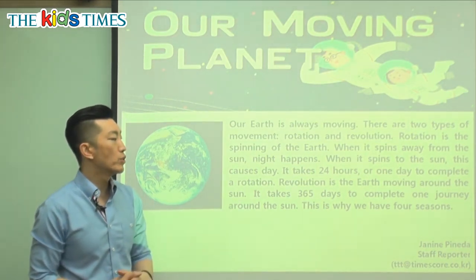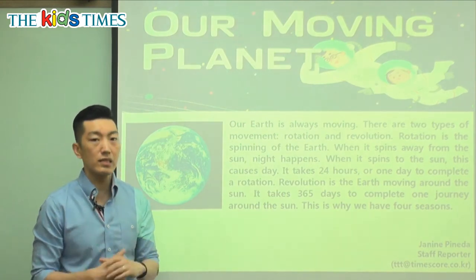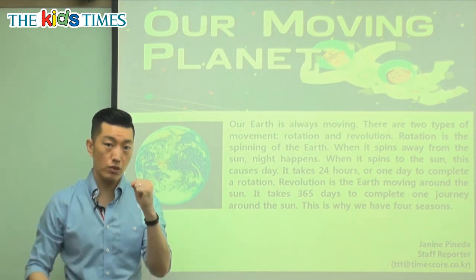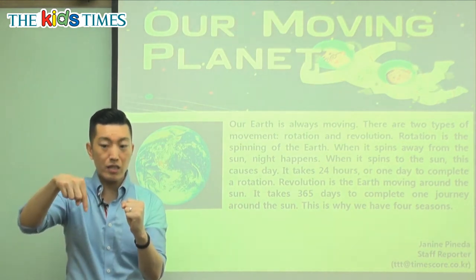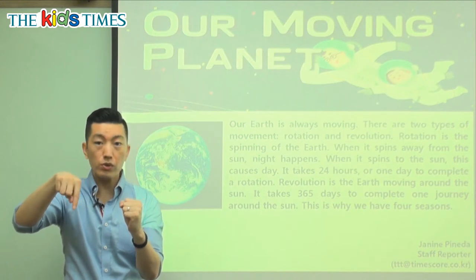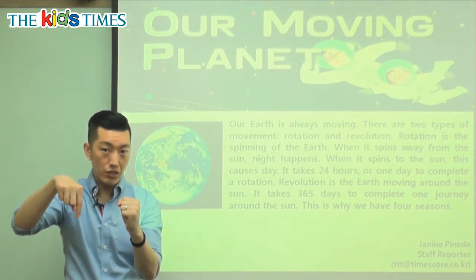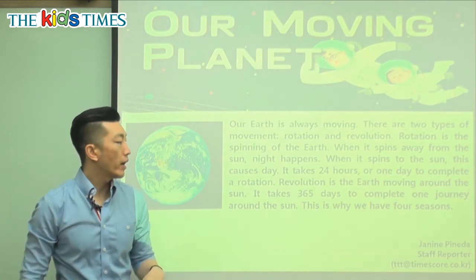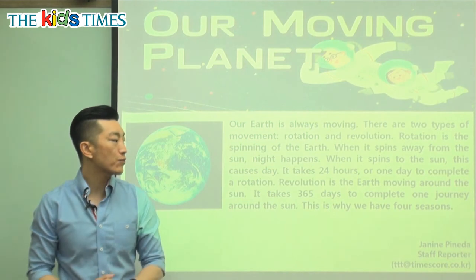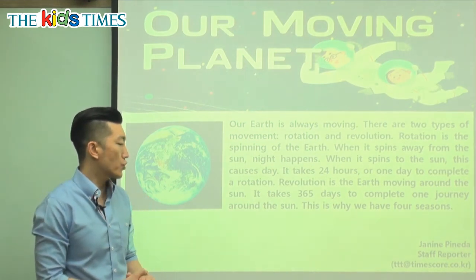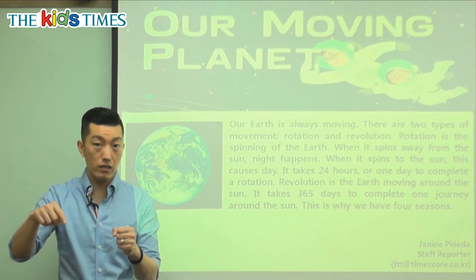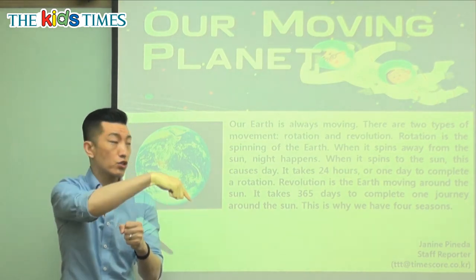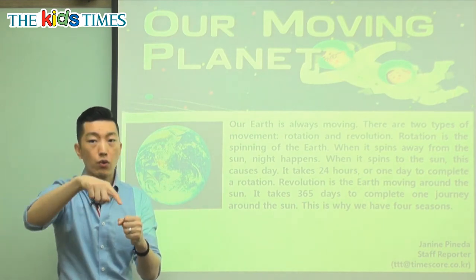Revolution is the Earth moving around the Sun. Revolution has a synonym and it's called orbit. Orbit or revolution means going around something. So the Earth is in rotation, but as it's in rotation, it also revolves — orbits — the Sun. It takes 365 days to complete one journey around the Sun, so it takes one year for the Earth to revolve or orbit around the Sun.